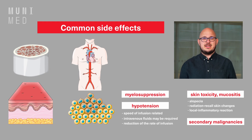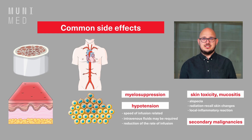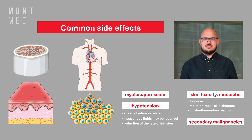Etoposide, like many chemotherapeutics, can cause a range of side effects. These may include myelosuppression, leading to decreased white blood cell count and increased susceptibility to infections. Etoposide can also cause hypotension, a side effect related to the rate of administration. In case of a drop in blood pressure, the infusion should be stopped and intravenous fluids should be administered.